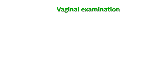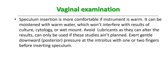For vaginal examination, speculum insertion is more comfortable if the instrument is warm — it can be moistened with warm water, which won't interfere with the results of culture, cytology, or wet mount. Avoid lubricants as they can alter results; they can only be used if these studies are not planned. Exert gentle downward posterior pressure at the introitus before inserting the speculum. Two kinds of speculum are available: the self-retaining bivalved Cusco speculum, and the Sim's speculum for which you need an anterior vaginal wall retractor.